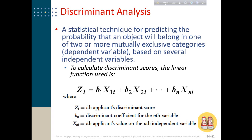Both Multiple Regression and Multiple Discriminant Analysis are dependence techniques used when you have multiple variables with at least one dependent variable. However, the key difference is that Multiple Regression is used when your dependent variable is a metric variable — interval or ratio scale — whereas Discriminant Analysis is used when your dependent variable is non-metric, for example a nominal variable.